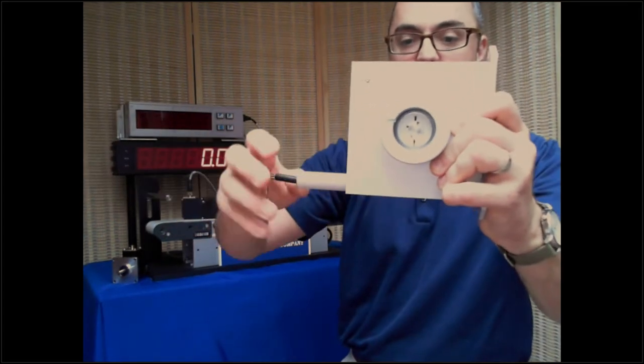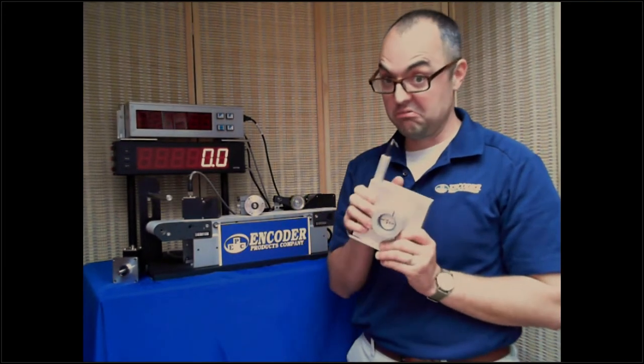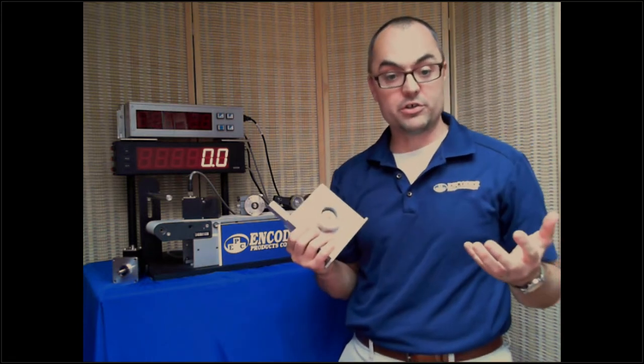So all a draw wire encoder is, is taking basically a very fancy measuring tape with steel cable and a spring, and we're putting it on an encoder and creating a linear measurement device.